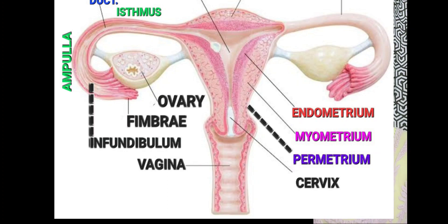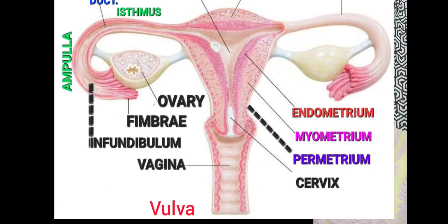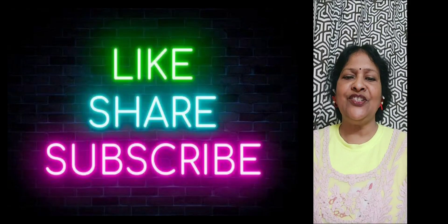The vulva is the outermost part of the female genitals and can be seen externally. In the next video we will discuss the external genitalia of the female in further detail. Thank you for watching — please do like, share, and subscribe to my channel.